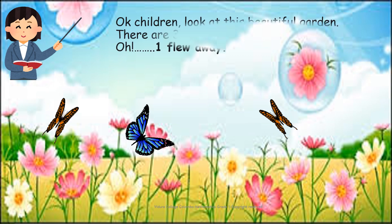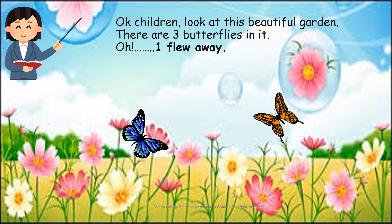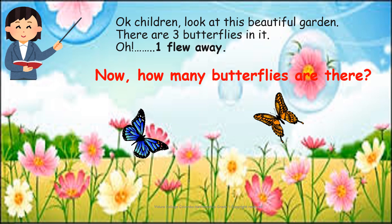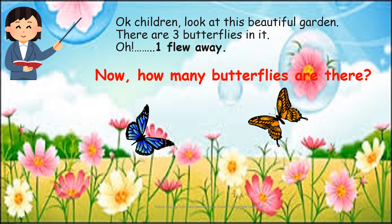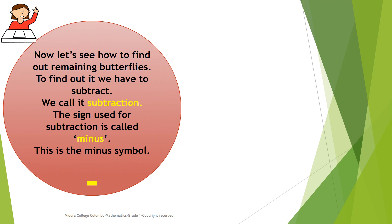Look at this beautiful garden. There are three butterflies in it. One flew away. Now, how many butterflies are there? Let's see how to find out the remaining butterflies. To find out, we have to subtract. We call it subtraction. The sign used for subtraction is called minus.